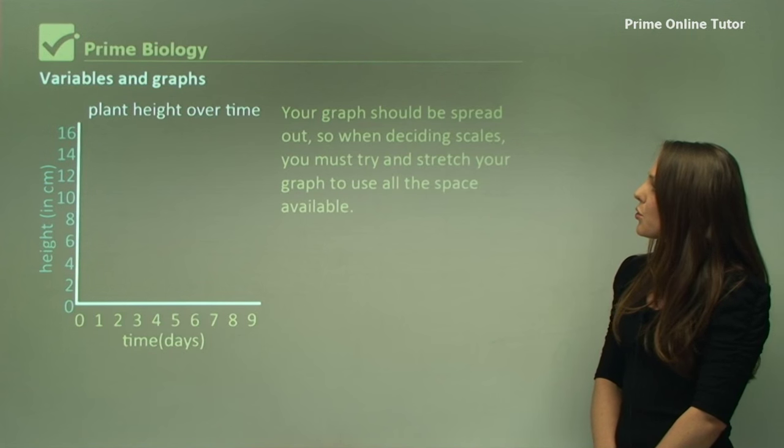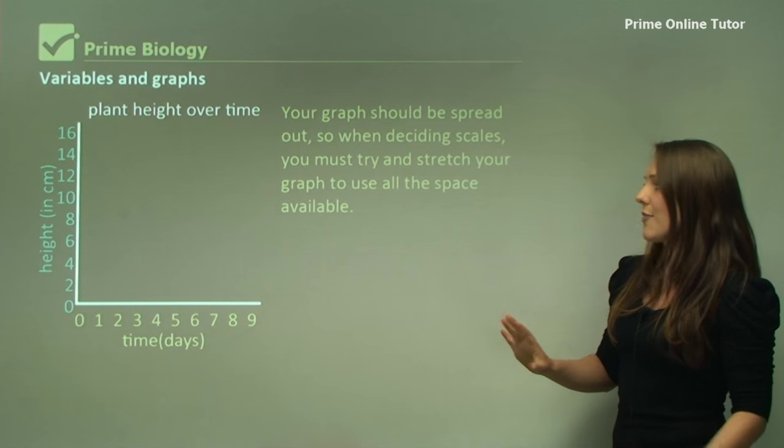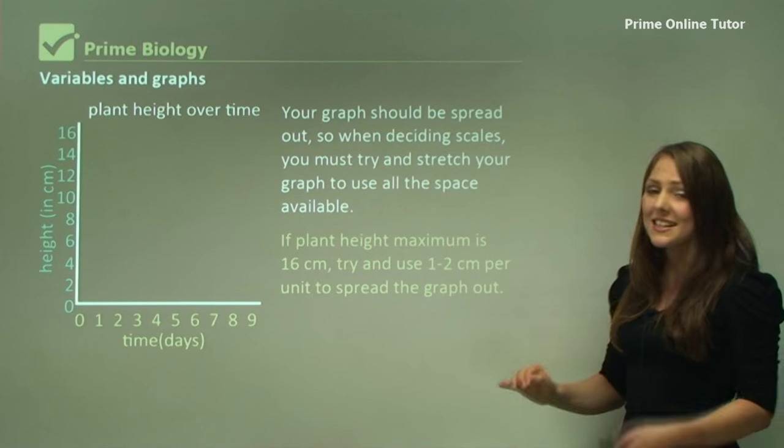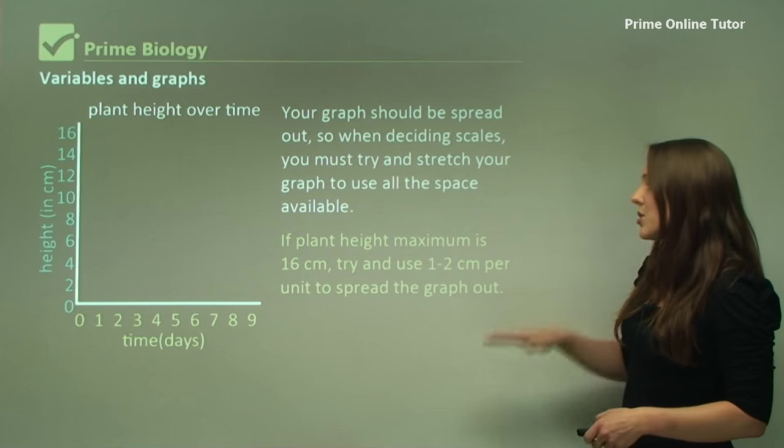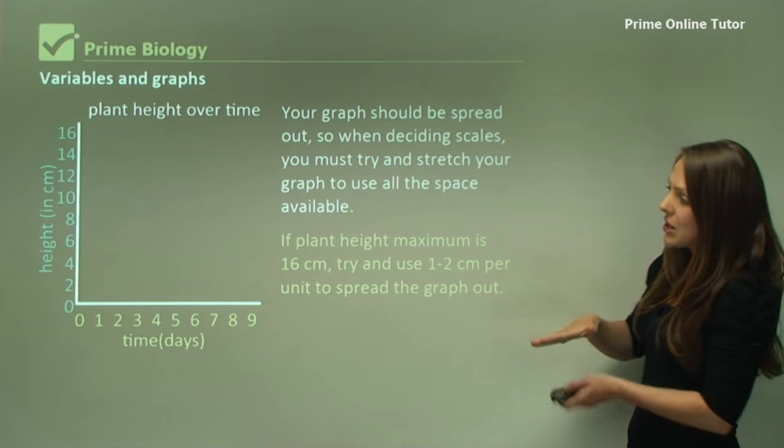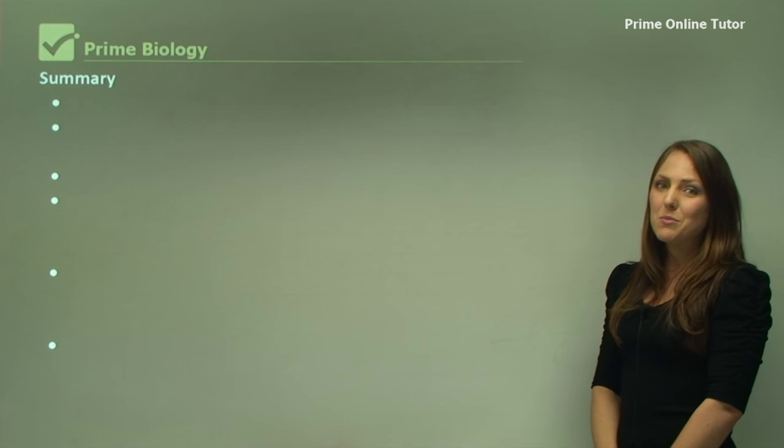So for this, your graph should be spread out. So when deciding scales, you must try and stretch your graph to use all the space available on your page. If the plant height maximum is 16 centimetres, try to use one to two centimetres per unit to spread the graph out. So you want to spread the graph out over the entire page.